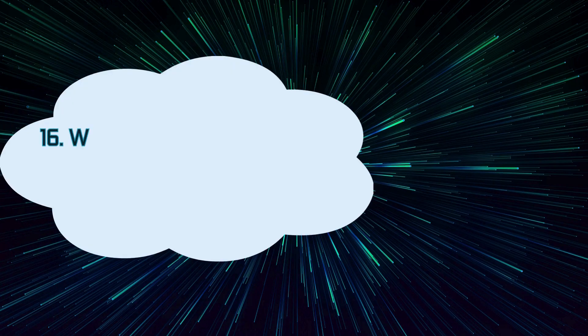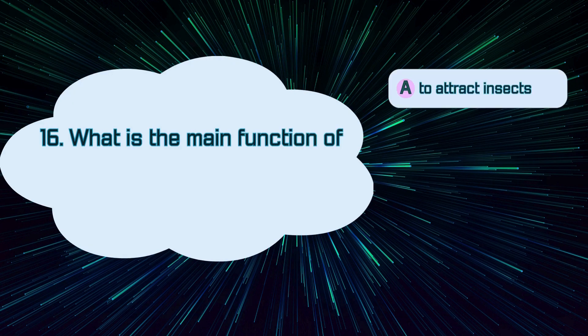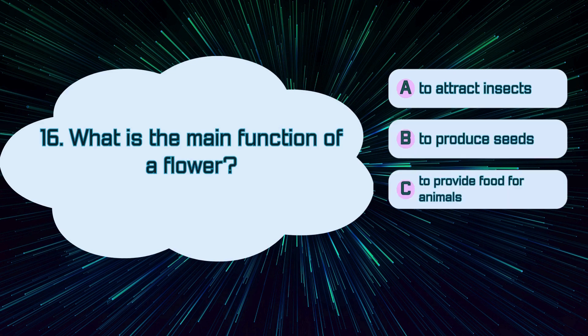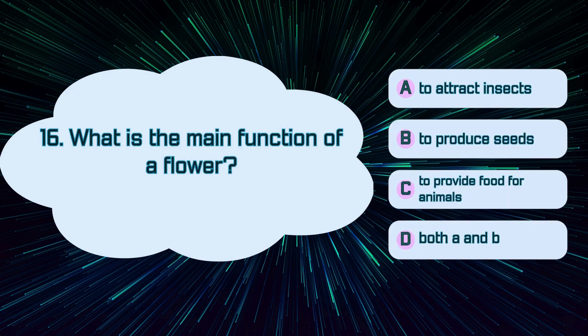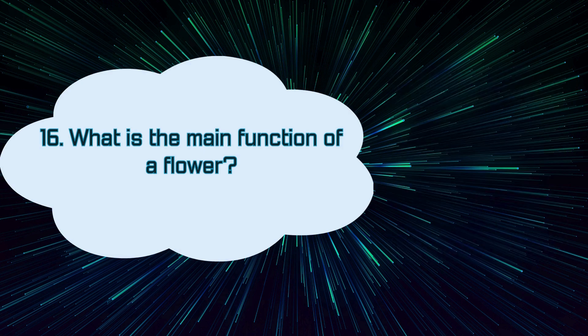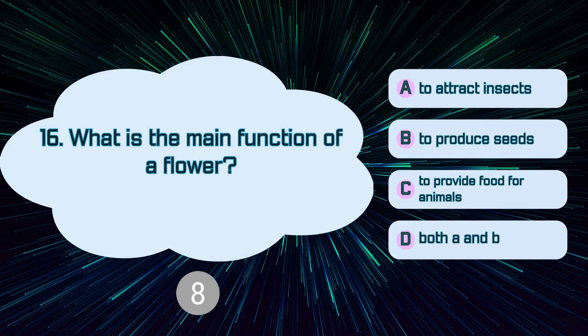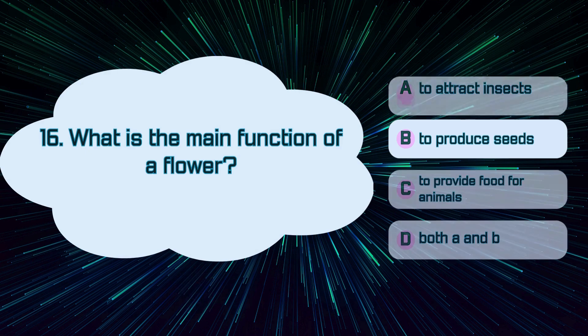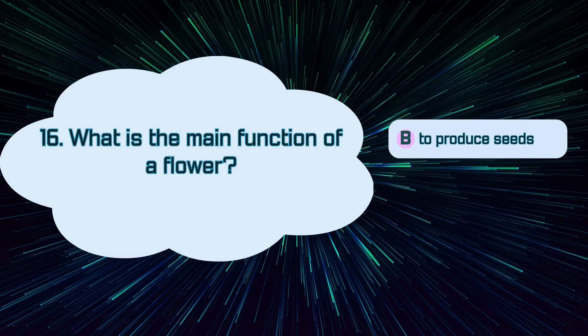Number 16. What is the main function of a flower? A. To attract insects, B. To produce seeds, C. To provide food for animals, D. Both A and B. The correct answer is B. To produce seeds.